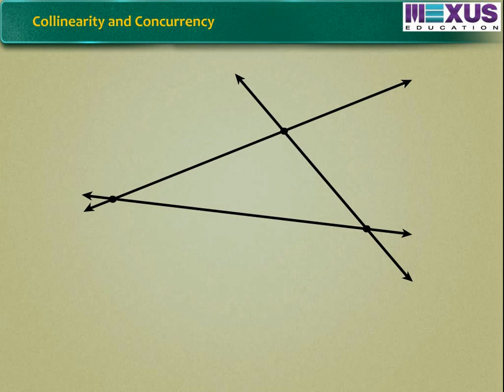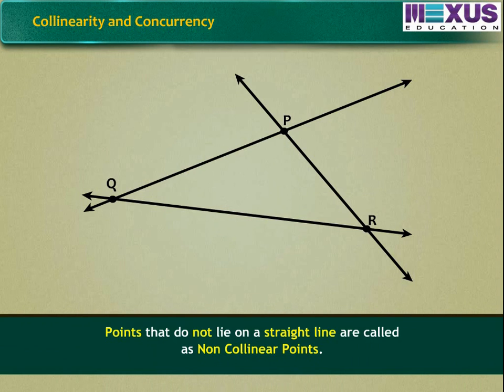While in this figure, we see that points P, Q and R do not lie on a straight line. So, these points are called as non-collinear points.